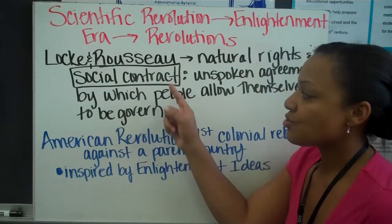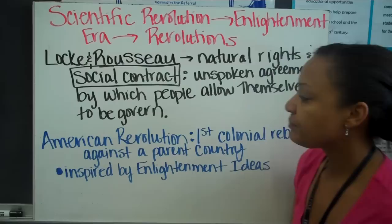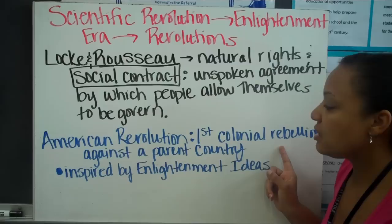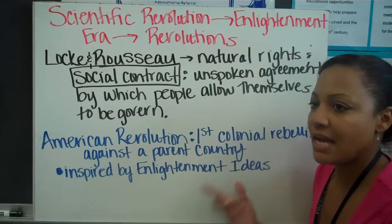Anytime the government violates this social contract, the people have a right to overthrow that government — which is going to connect to our Declaration of Independence. The American Revolution is going to be the first colonial rebellion, because originally we did belong to England, which colonized the 13 colonies.